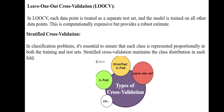The third type is stratified cross-validation. In classification problems, it is essential to ensure that each class is represented proportionally in both the training and test sets. Stratified cross-validation maintains the class distribution in each fold.